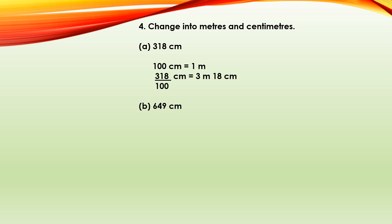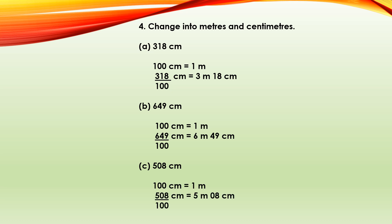Part B — 649 centimeters. Same way: 100 centimeters makes 1 meter. Divide by 100 — you get 6 meters 49 centimeters. Part C — 508 centimeters. Divide by 100 — you get 5 meters 8 centimeters. When you divide, you get 5 as the quotient — that is your bigger unit, which is 5 meters. The remainder is 8 — that is your smaller unit, 8 centimeters. In this way, you do the conversion.